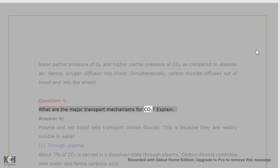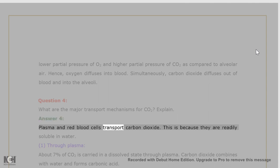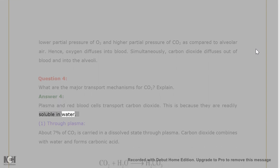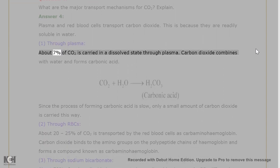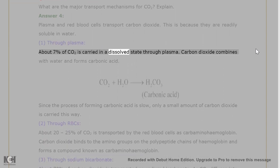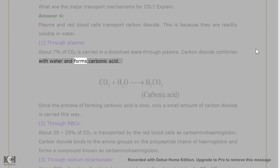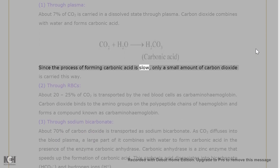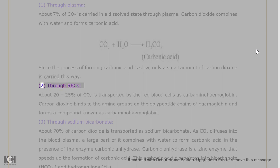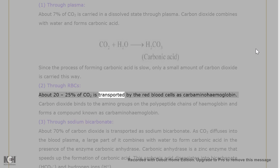Question 4: What are the major transport mechanisms for CO2? Answer 4: Plasma and red blood cells transport carbon dioxide, as they are readily soluble in water. (1) Through plasma: About 7% of CO2 is carried in a dissolved state through plasma. Carbon dioxide combines with water to form carbonic acid, but since this process is slow, only a small amount is carried this way.